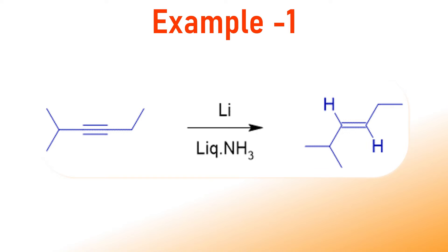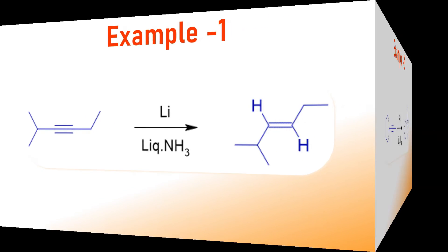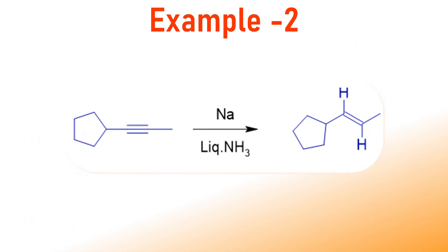This is example 1. Here, you can clearly see a trans-alkene is formed. This is example 2. The triple bond is reduced to the double bond. Again, the hydrogens are trans to each other.